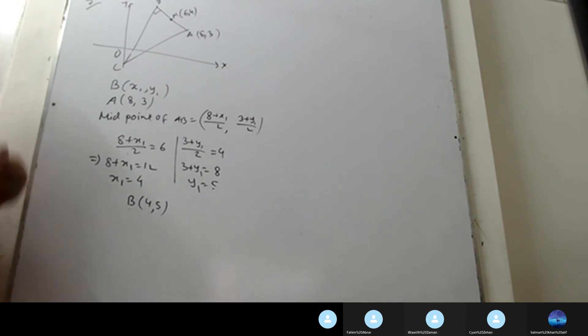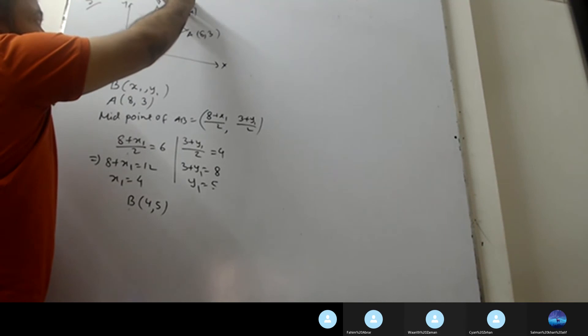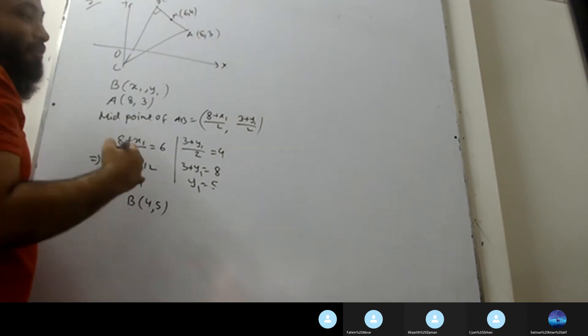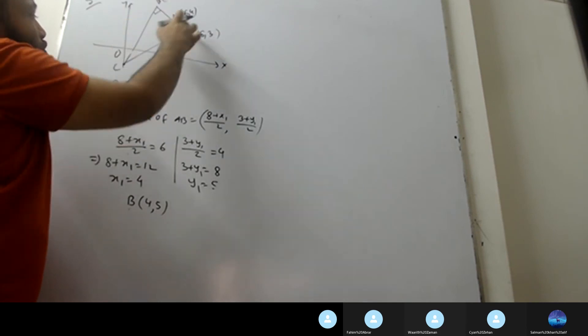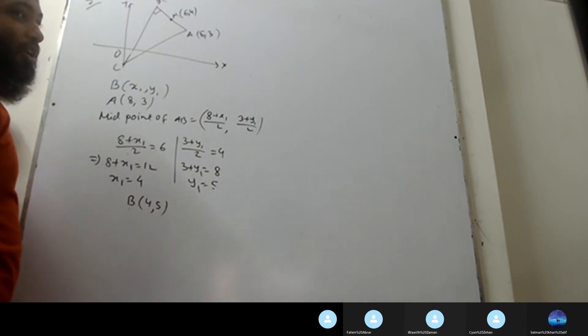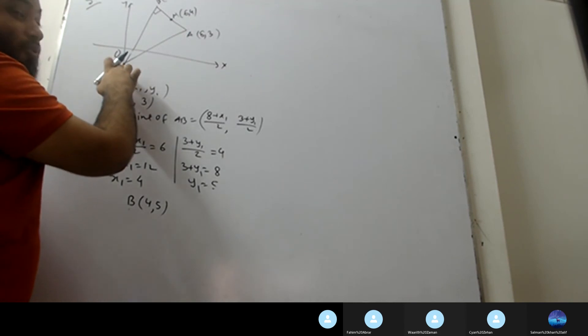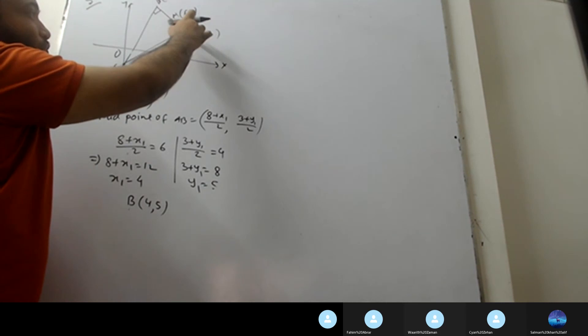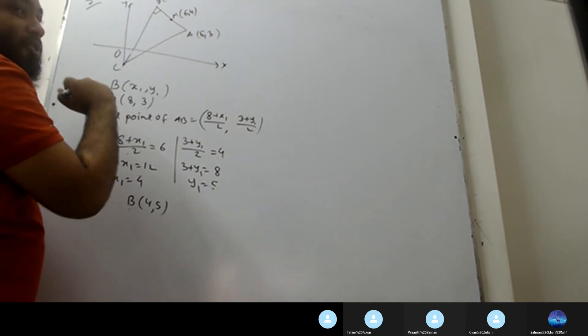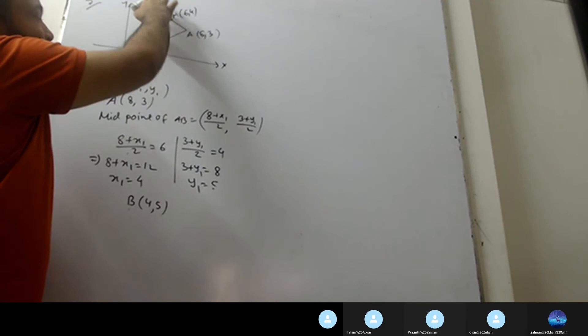So B coordinate is (4,5). Now I need to find the equation of line BC.